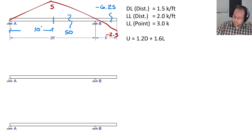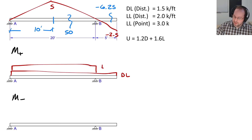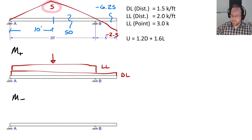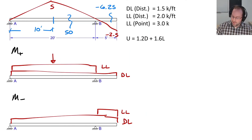For the positive moment case, dead load is everywhere. Live load is placed only where there is positive influence — only in the first span, not on the cantilever — and the point load goes at the peak influence of 5. For the negative moment case, dead load is everywhere again, live load is placed only on the cantilever span, and the point load is placed at the end where the worst case negative influence occurs.